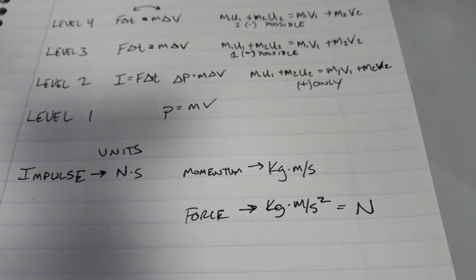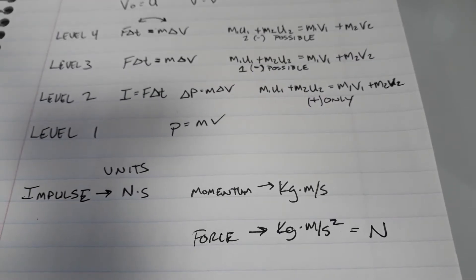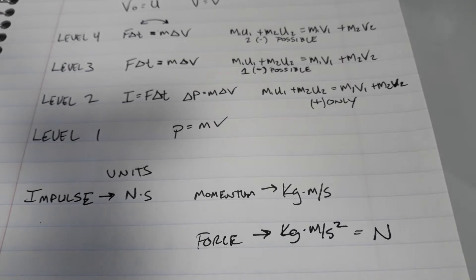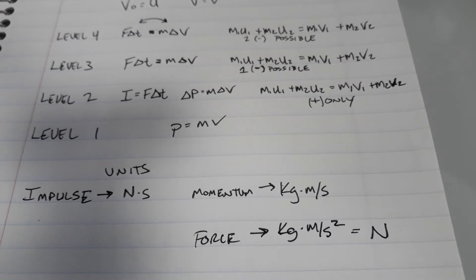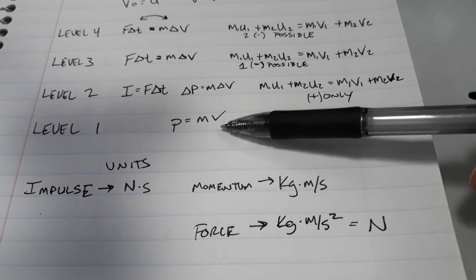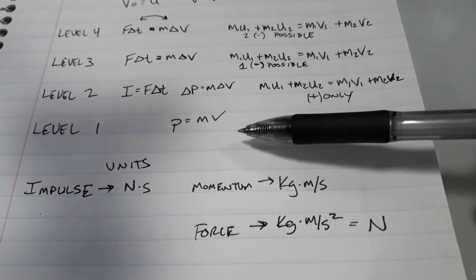I'm sorry it's a little bit crooked for you guys, but I'm recording it correctly on the video. Let's start at level one. We're going to work our way up through the ladder. Level one is right here, and it is one single equation, the equation for momentum.